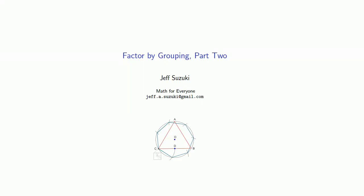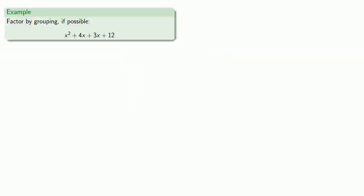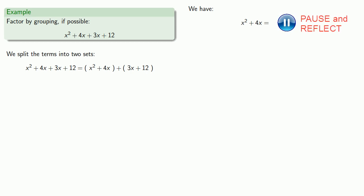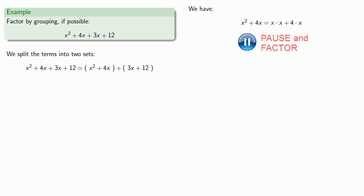Let's see if we can generalize this process of factoring by grouping. So let's try to factor by grouping, if possible, x squared plus 4x plus 3x plus 12. We'll split the terms into two sets — the first two terms in one set and the second two terms in the other. We'll try to factor both sets. x squared plus 4x both have a common factor of x, so we can remove it and get x times x plus 4.